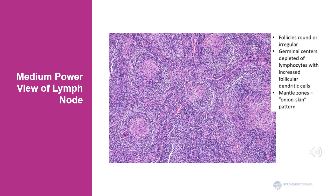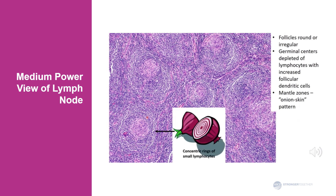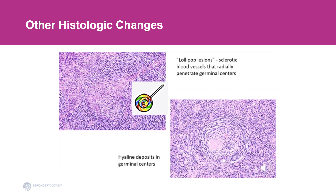This is a medium power view of the same lymph node, and it shows mostly follicles which are increased in number. Follicles can be round or irregular. Germinal centers, which are in the center of the follicles, are depleted of small lymphocytes and instead have increased follicular dendritic cells. Mantle zones, which surround the germinal centers, show a so-called onion skin pattern — concentric rings of small lymphocytes reminiscent of an onion when cut in half. Another helpful feature are lollipop lesions, which are sclerotic blood vessels that radially penetrate the germinal center, reminiscent of a lollipop.